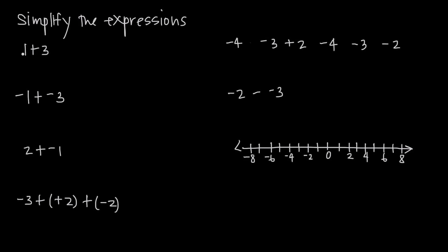In our first example, we have positive 1 plus positive 3, which equals positive 4 — simple addition. On the number line, we always start at the origin at 0. We move to the right 1 unit for the positive 1, then continue moving to the right 3 more units for the positive 3 — 1, 2, 3 — and we end up at 4. That's why we get positive 4.